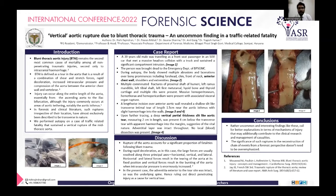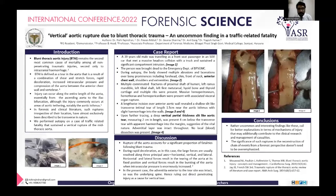During autopsy, the body showed multiple abrasions and lacerations over bony prominences including the forehead, chin, front of neck, anterior chest wall, shoulders, and extremities. There were multiple comminuted fractures of the proximal shaft of the humerus, left ramus of mandible, left ulna shaft, left first metatarsal, ear bones and thyroid cartilage, and multiple ribs were also fractured.